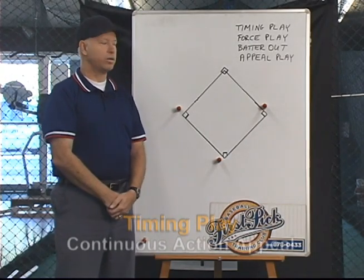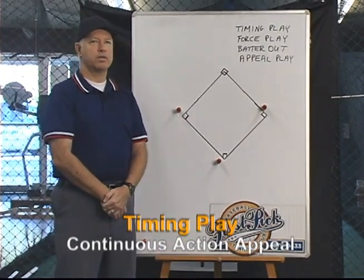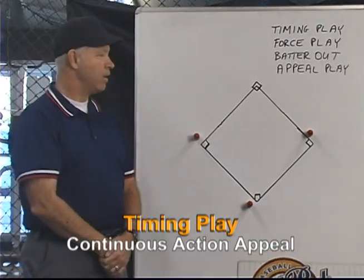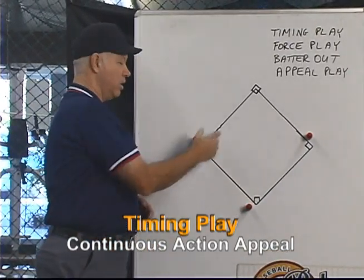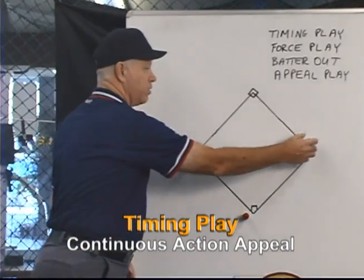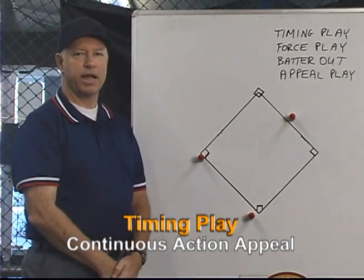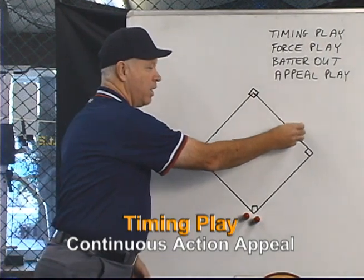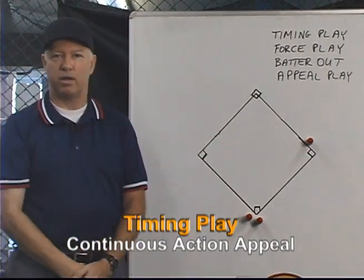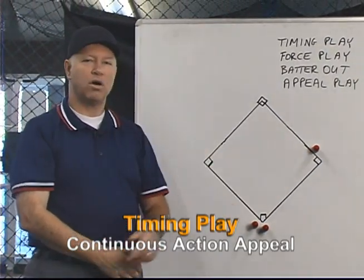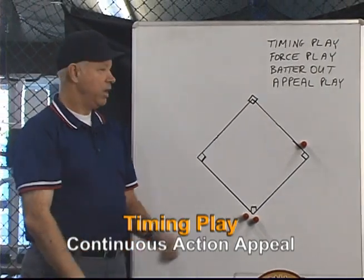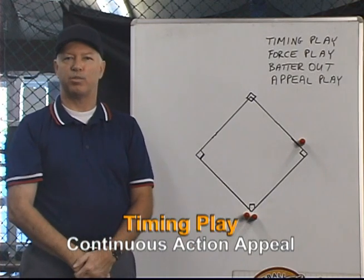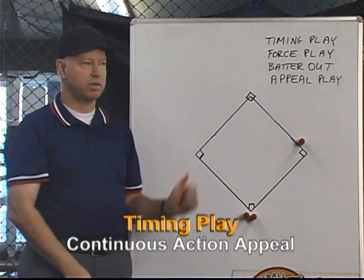Now we're going to deal with the situation where there are runners on first and third with only one out. There's a lot of confusion on this play — people think it's a force out, in which case runs would not count, but this is not a force out play. The batter hits a fly ball, so the runner on third gets ready to tag up and the runner on first goes part way. The ball is caught for the second out. The runner from third legally retouches, comes in, and scores. The throw from the outfield goes back to first and reaches first base before this runner gets there. That's a continuous action appeal. If he's called out, that's not a force out — it's an appeal out. If that out occurs after this runner touches the plate, the run would score. If the out occurs before he touches the plate, it would not score. It's a timing play, not a force play. This is a continuous action appeal.